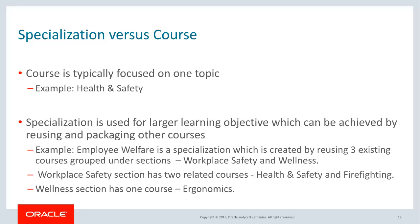Now let's see how a specialization is different from a course and when it may be used. A course is typically focused on a single topic — for example, health and safety, ergonomics, etc. A specialization is used for a larger learning objective and is created by reusing and packaging various related courses. For example, Employee Welfare is a specialization created from three existing courses: two logically related courses grouped under the section Workplace Safety, and another section called Wellness with a course on ergonomics. Together, these sections and courses form the specialization, which imparts larger learning to its learners.